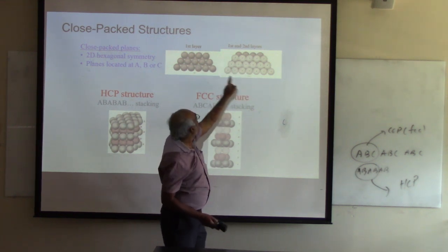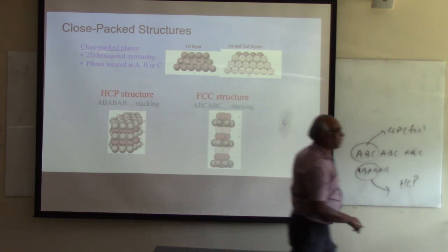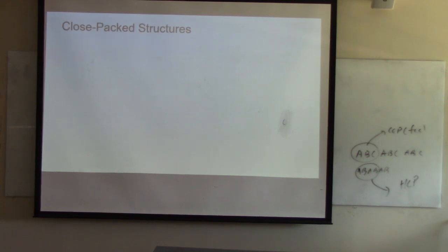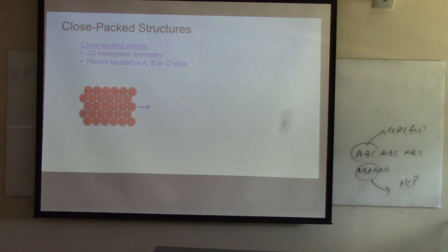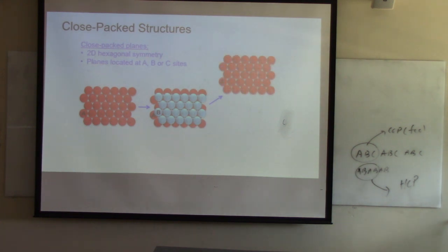Most standard perovskites have five atoms per conventional unit cell. Sometimes it's easy to understand the crystal structure by thinking about the void space and connecting nearest neighbors. For simple cubic the coordination number is 6, for BCC it's 8, and for FCC it's 12 nearest neighbors.